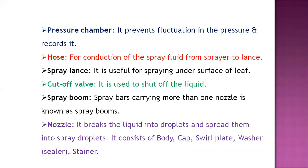The pressure chamber prevents fluctuation in the pressure. The hose is used for conduction of the spray fluid from the sprayer to the lance. The spray lance is useful for spraying under the surface of leaves where chemicals cannot properly spread otherwise. It helps to easily reach target pests or diseases on the underside of leaves. The cutoff valve is used to shut off the liquid.